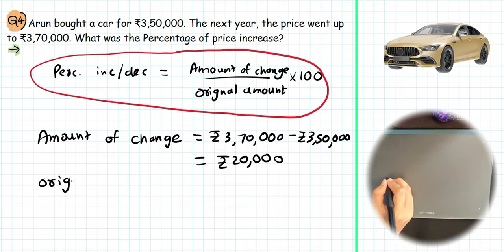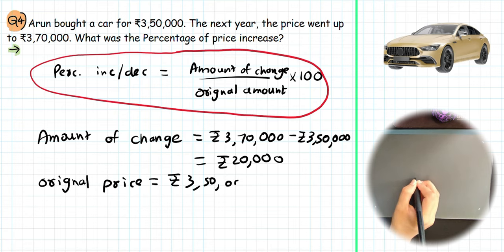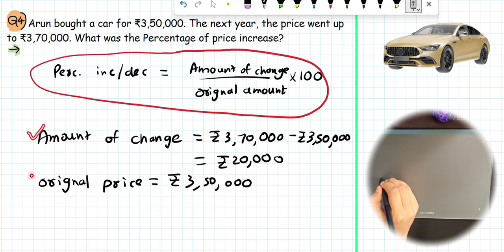Next, we will find out the original amount, which equals ₹3,50,000, which is the price that Arun bought this car. So let's put these values in the equation.